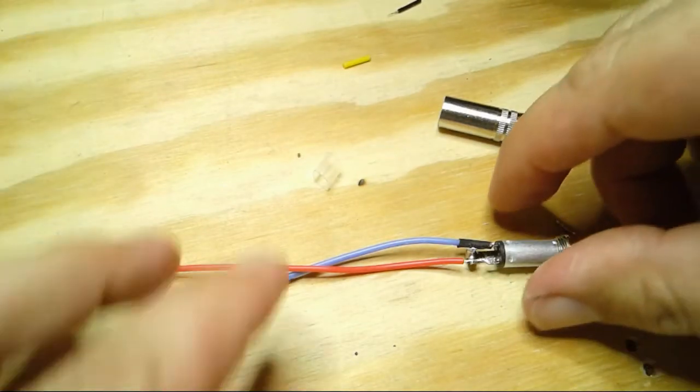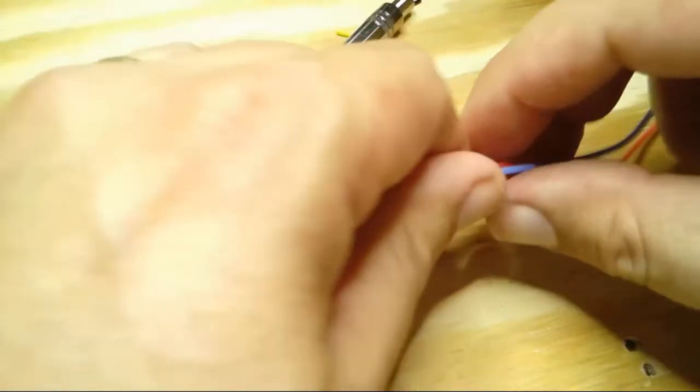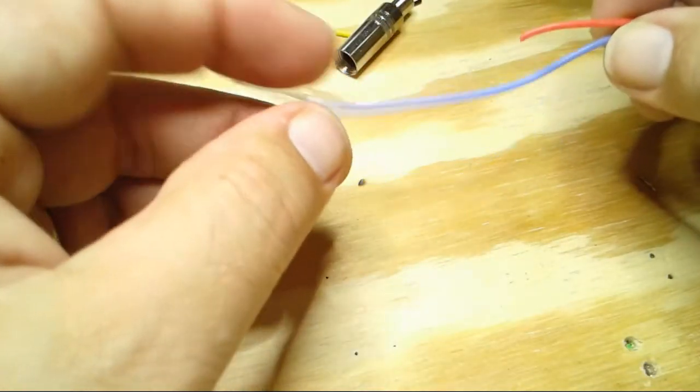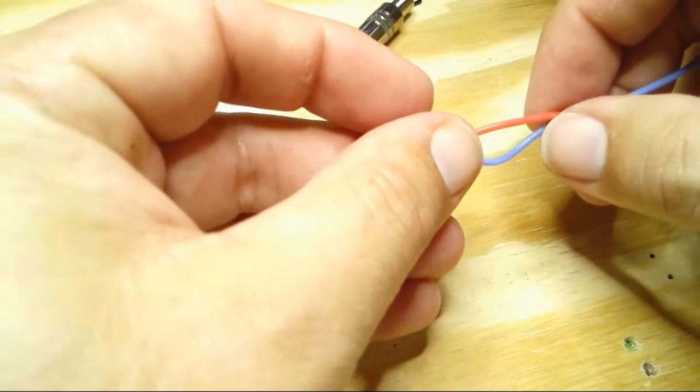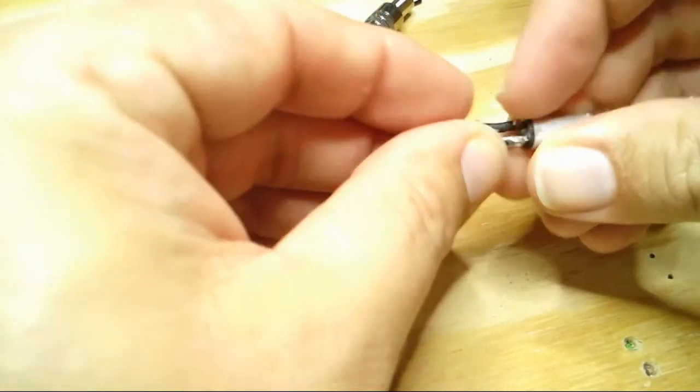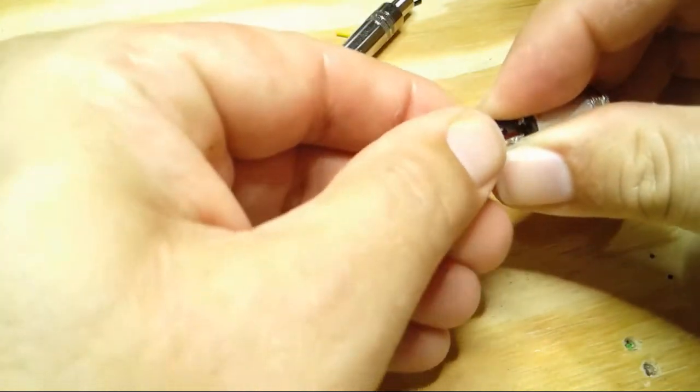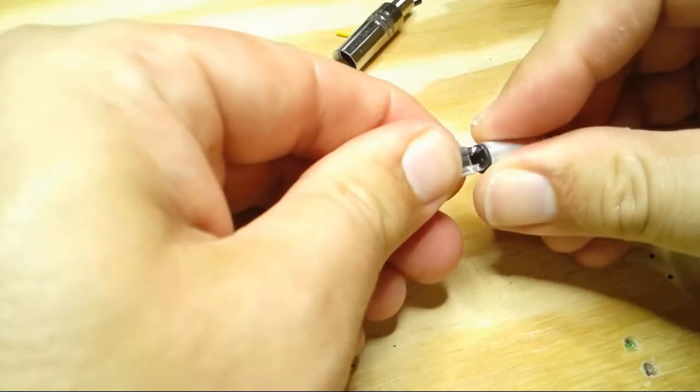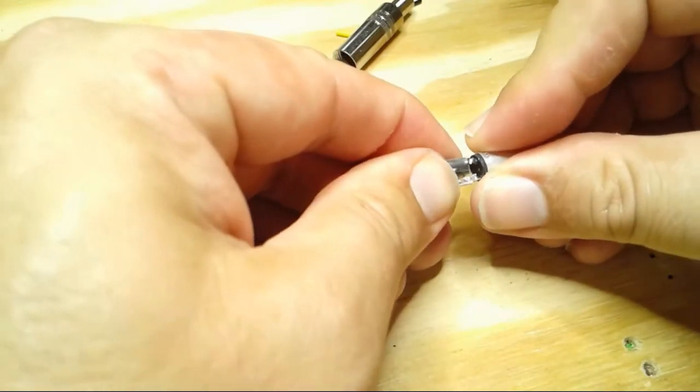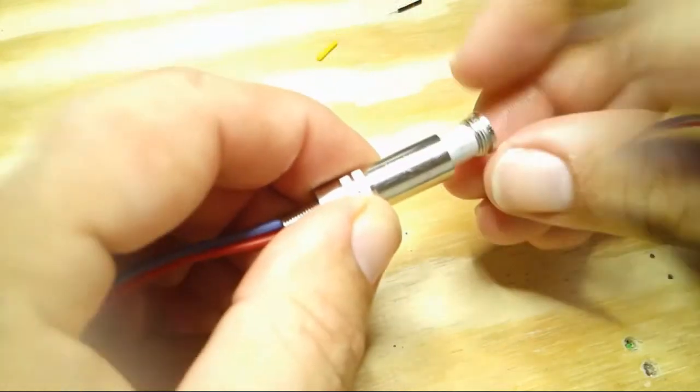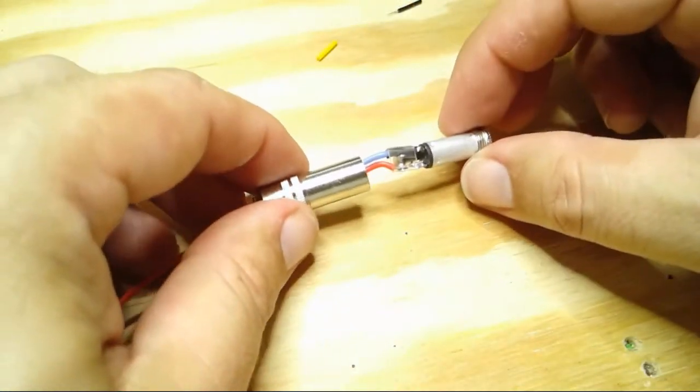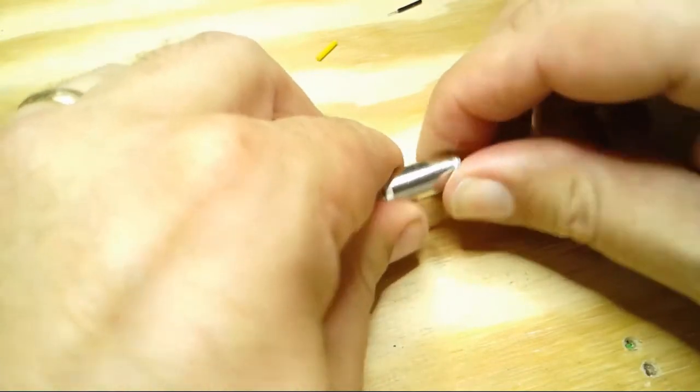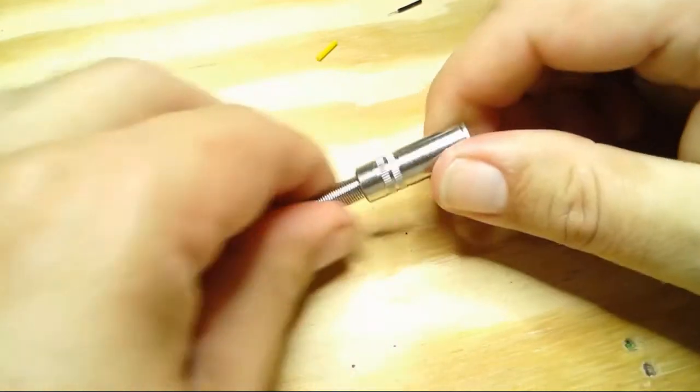So now we're ready to reassemble. First, we're going to put the plastic over the two wires. And we may have to manipulate them a little bit to get that to go on there. It's mainly meant to protect the metal sleeve. So that goes on just like that. Now we'll put on the metal sleeve. Twist it on. And we are done.